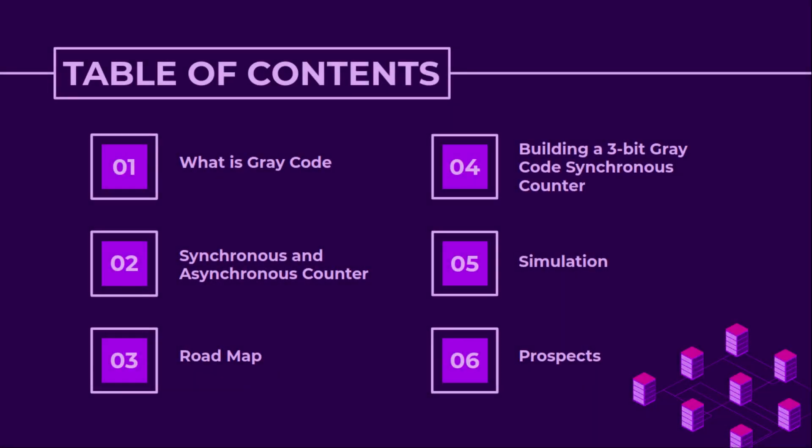We will start off by seeing what is gray code, then understand the difference between synchronous and asynchronous counters. We will then see the roadmap to the approach we will be following to build a 3-bit gray code synchronous counter, see the simulation based on the circuit we build, and finally finish off by seeing the prospects of scaling the counter to 4-bit.